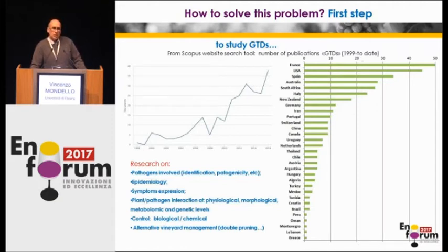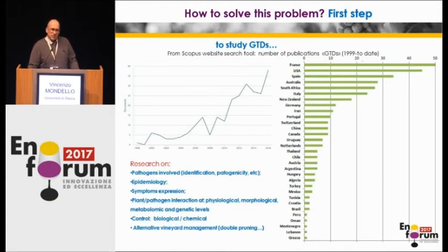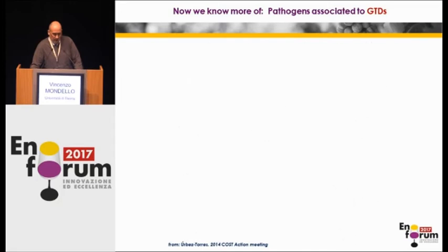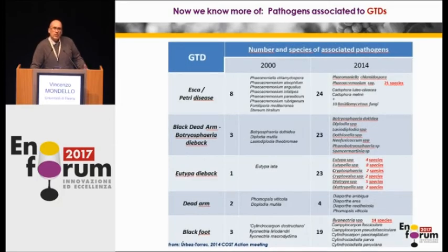This research involved several areas: epidemiology; the interaction between the plant and the pathogen at physiological, morphological, metabolomic, and genetic levels; possible biological and chemical control; alternative vineyard management techniques; and nursery management.